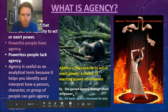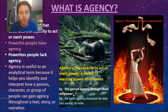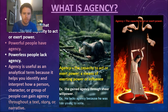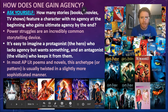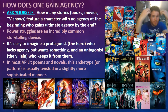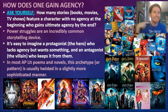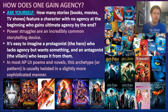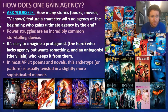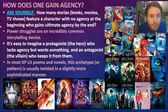Someone might gain agency through sheer willpower, or somebody might lack agency because they are too young to vote. How does one gain agency? How many stories, books, movies, and TV shows feature a character with no agency at the beginning who gains ultimate agency and the power to exert themselves by the end of the story? Power struggles are an incredibly common storytelling device. You might know the very common conflicts in literature: man versus man, man versus nature, man versus God, man versus himself, man versus fate, man versus technology.